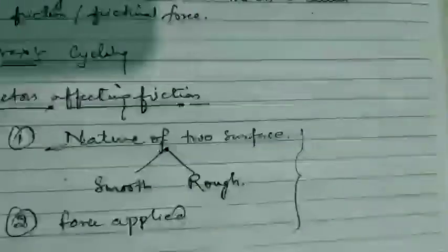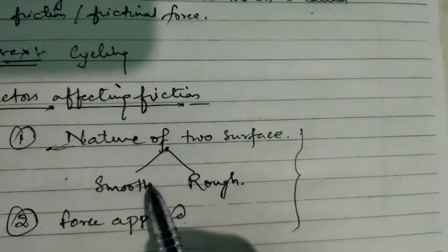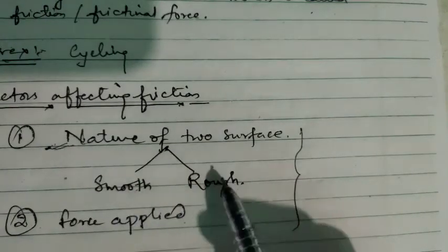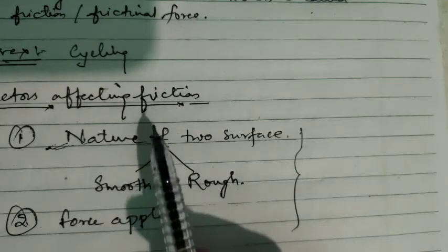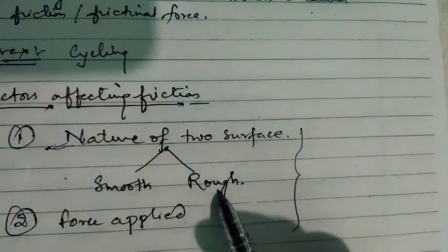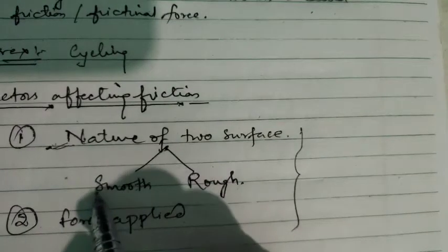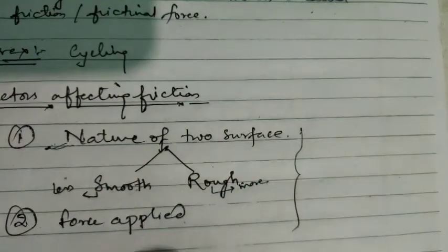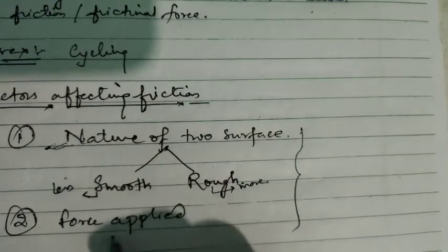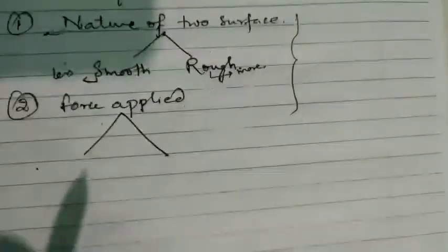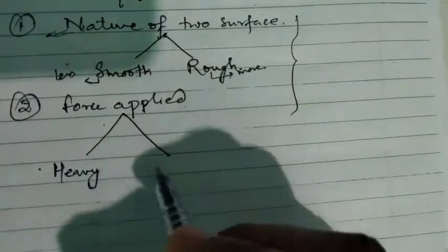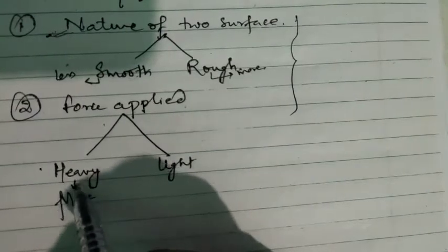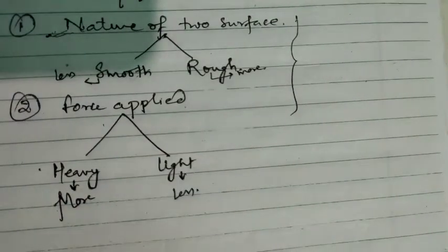So to summarize the two factors: for the nature of two surfaces — if it is smooth, friction will be less; if it is rough, friction will be more. For the force applied — if the object is heavy, friction will be more; if the object is light, friction will be less.